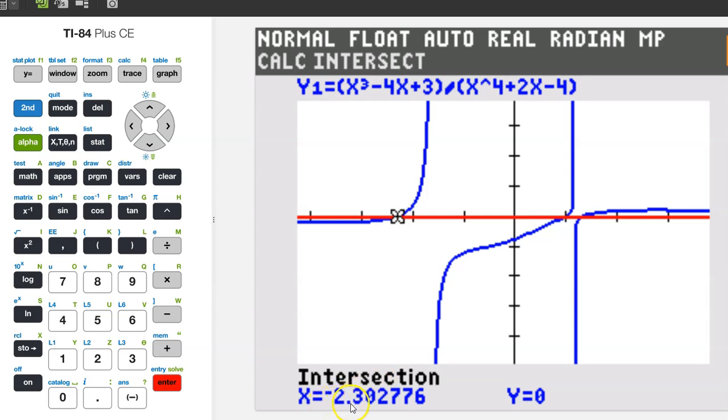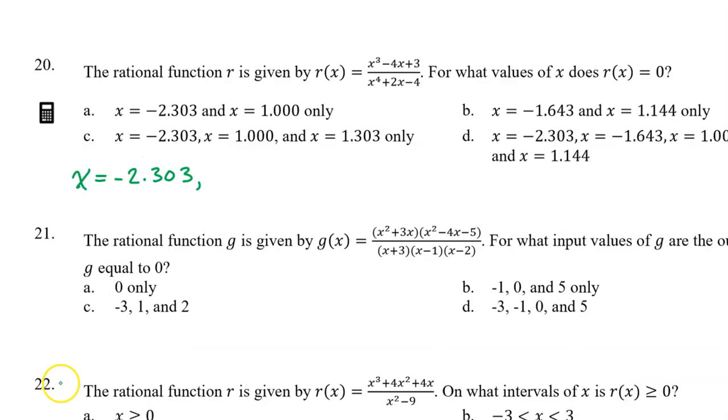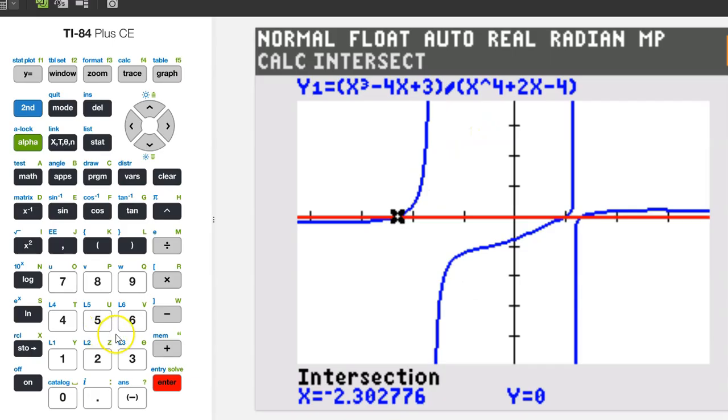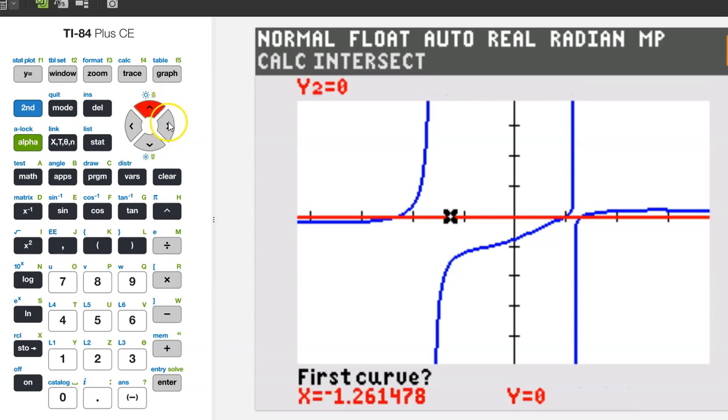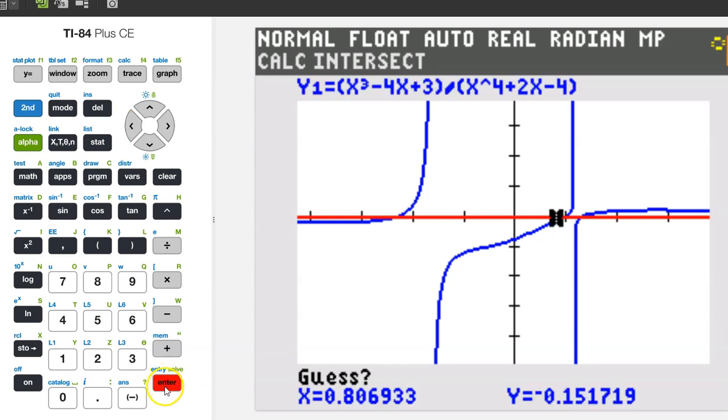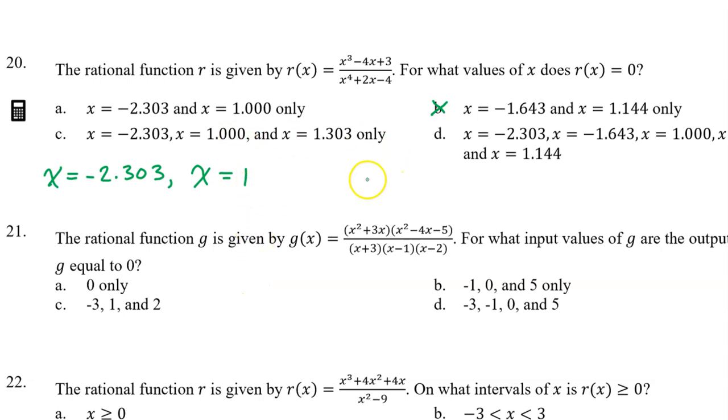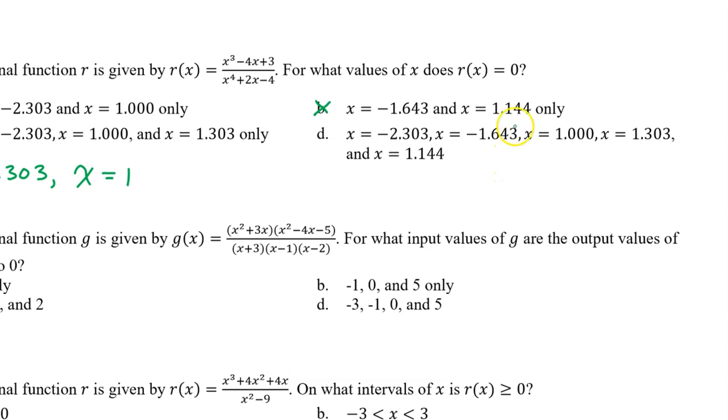So my first zero is at negative 2.303. So you can see we are on the right track. We can eliminate option B so far. Let's go after this middle zero now. So let's hit second, trace, intersect again. Move that pointer close to that middle zero. And just hit enter three times. Oh, this is exactly one. I started to say we can't eliminate anymore, but we can eliminate D because there was only one negative zero, negative 2.303. There was no negative 1.643. So we can eliminate D.